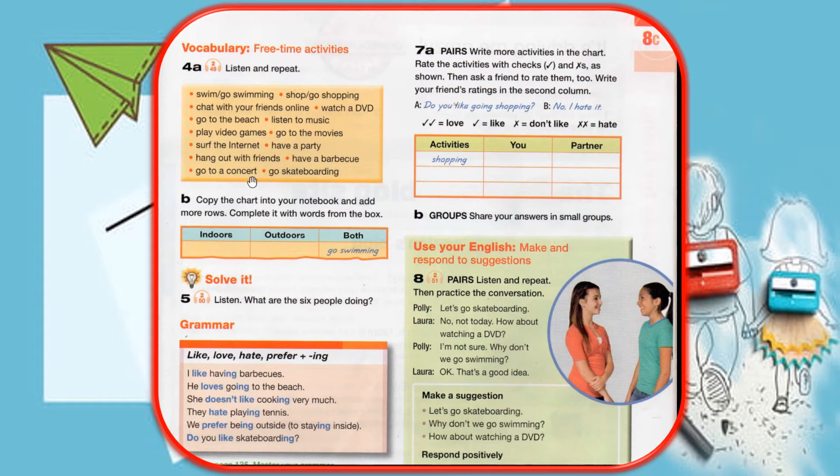So copy the chart in your notebook and add more rows. Complete it with words from the box: indoors, outdoors activities, and both situations.